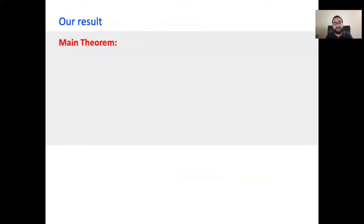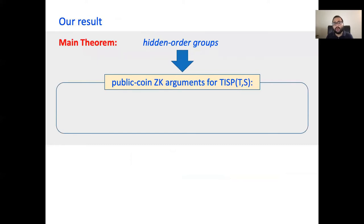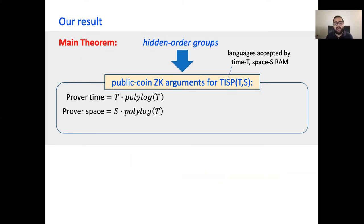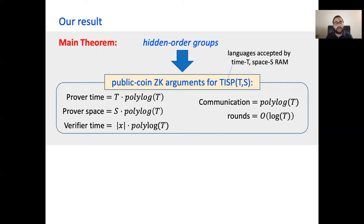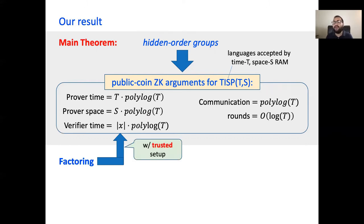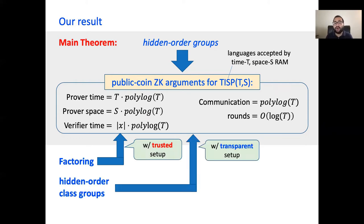Now to state our main result: given such hidden order groups, we construct public coin zero-knowledge arguments for language L accepted by time t and space s RAM programs, where the prover time and space and the verifier time are optimal up to polylog t factors. Our protocol is interactive and has log t rounds and polylog t communication. Instantiating the hidden order group with an RSA group will result in an argument from factoring, but this would require trusted setup. Instantiating with hidden order class groups results in an argument with transparent setup.